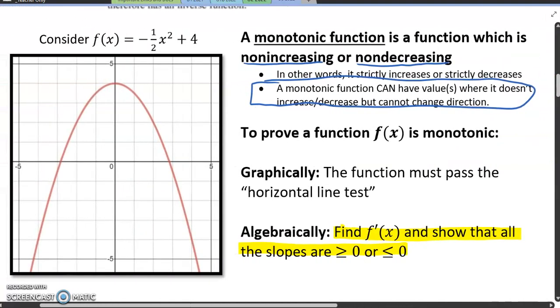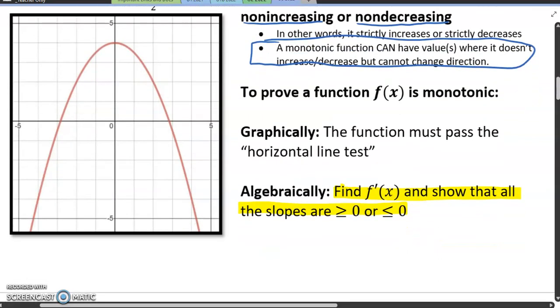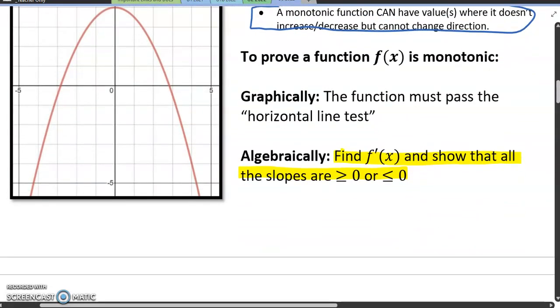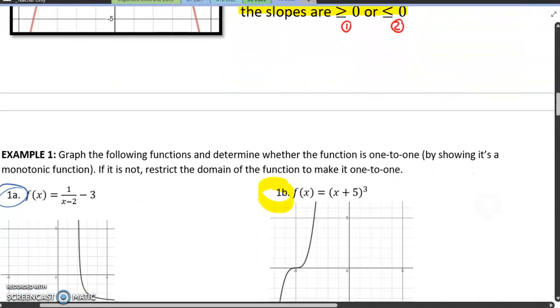So how can we prove it? So graphically, the function must pass the horizontal line test. So if you have the ability to graph something, if you have a calculator, desmos, or any kind of graphing utility, you can use that and essentially say, well, it needs to pass the vertical line test to be a function. It needs to pass the horizontal line test to be monotonic. That's not going to be the more common way. In fact, what we're actually going to be looking at here is algebraically. We're going to find the first derivative and show that all of the slopes are either greater than or equal to zero or less than or equal to zero. So it needs to either be scenario number one or scenario number two. If neither of those scenarios apply, then we're going to simply say, nope, it's not going to be monotonic. So let's look at some examples of this.